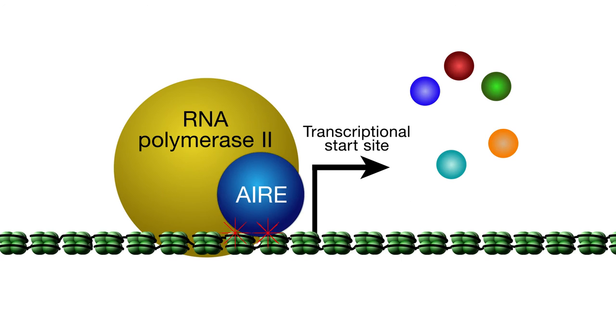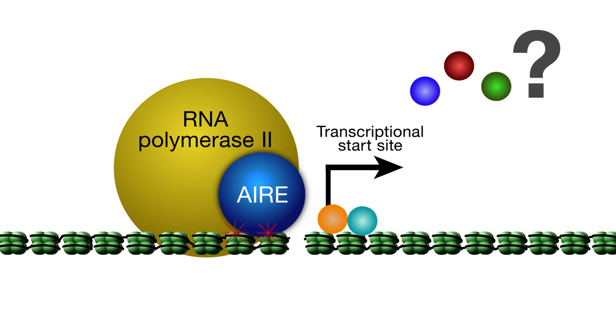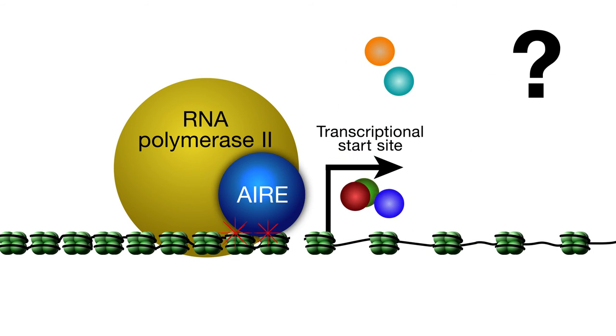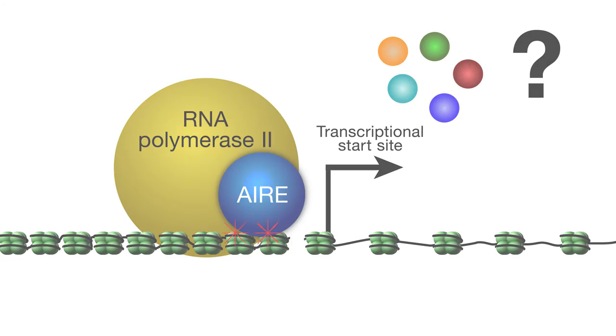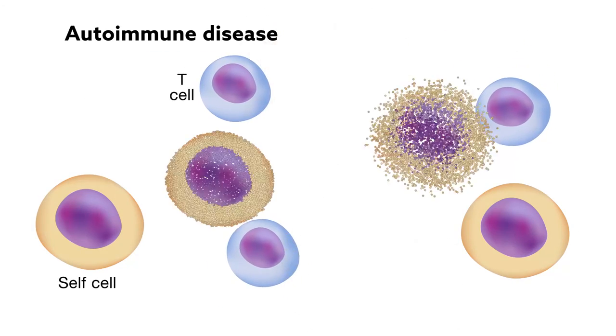Although parts of this fascinating picture are coming into focus, much remains to be discovered. For example, researchers are trying to identify the specific factors that help open up the chromatin around AIRE target genes. Better knowledge of these pathways may inform future therapies for autoimmune diseases.